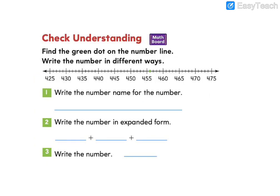Great, let's look at check understanding. You're going to find the green dot on the number line. Then you'll write the number in different ways. So there's our green dot. Think about what it's after or what it's before to help you figure out what number it is. Then you'll write the number name, the number in expanded form, and the number itself. You might want to start with number three to help you.